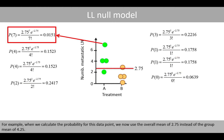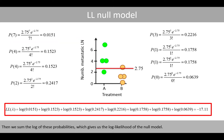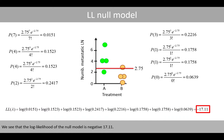For example, when we calculate the probability for a data point that previously used the group mean of 4.25, we now use the overall mean of 2.75 instead. Then we sum the log of these probabilities, which gives us the log likelihood of the null model. We see that the log likelihood of the null model is negative 17.11.